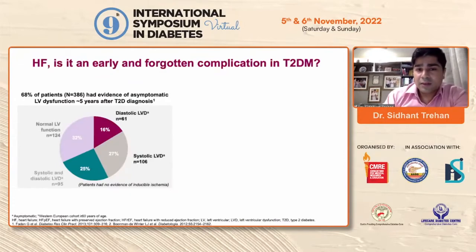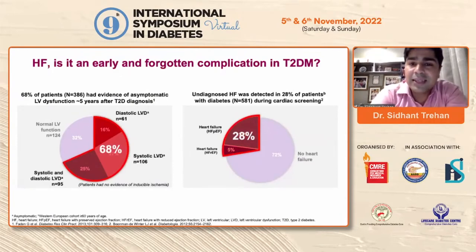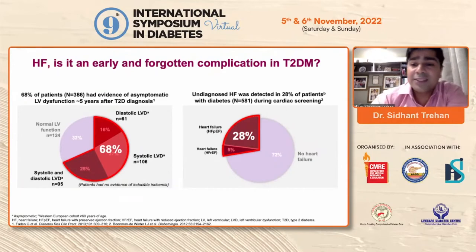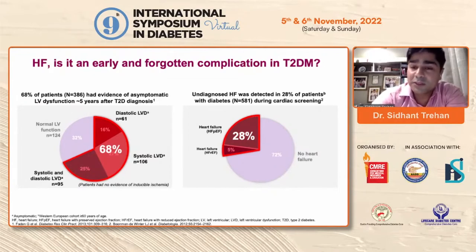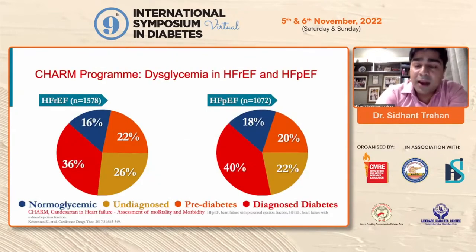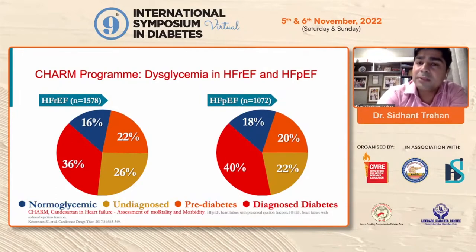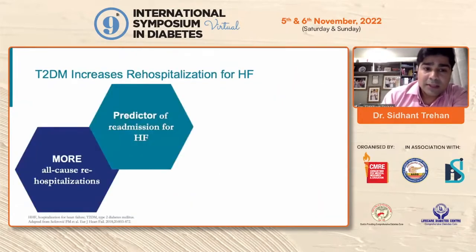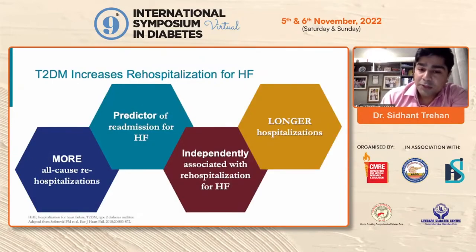Is heart failure an early and forgotten complication in diabetics? When diabetics underwent screening, around 28% of them happened to have undiagnosed heart failure, and 68% of diabetics at the end of five years would have LV dysfunction — only one-third would not have LV dysfunction, which is a very high rate. It's not just that heart failure is seen in diabetics; diabetes is also very commonly seen in heart failure patients. In the CHARM study, dysglycemia was frequently represented in both reduced and preserved ejection fraction groups — seen in about 85% of patients with reduced ejection fraction and around 80% in preserved ejection fraction. Type 2 diabetes increases re-hospitalization rates, is predictive for readmissions, and is independently associated with re-hospitalization, which also tends to be much longer.